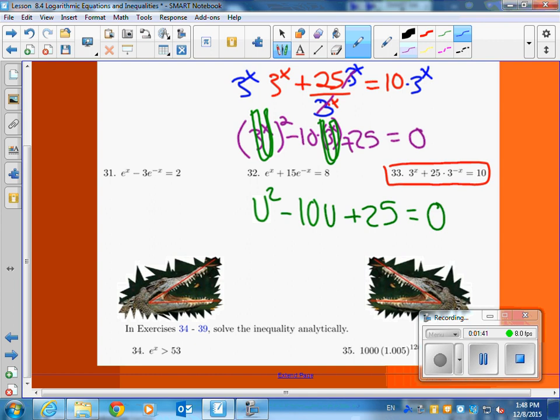So u squared minus, that's quadratic, so let's factor this rascal. And it factors into what? Will that be minus 5 and minus 5? Is that right? And then u is the same as e to the x. That's u. How are we doing so far? Doing all right?